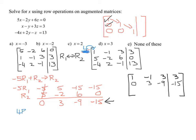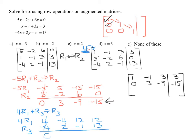So we're going to take 4 times row 1 plus row 3 and put it in row 3. Four times row 1: 4 times 1 is 4; 4 times negative 1 is negative 4; 4 times 3 is 12; 4 times 3 is 12. Row 3 is negative 4, 2, negative 1, and 13. Adding: 4 minus 4 gives us the 0 we wanted; negative 4 plus 2 is negative 2; 12 minus 1 is 11; and 12 plus 13 is 25. So the new row 3 is 0, negative 2, 11, and 25.